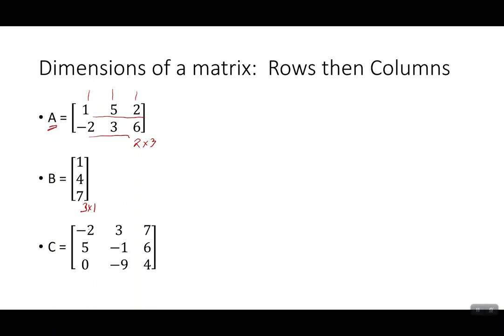So the next one has three rows. Three rows, one, two, three rows going across, and three columns. So it's a three by three matrix. This is a square matrix. Any matrix that's square has the same number of rows and columns.